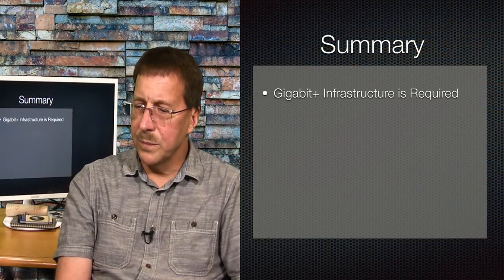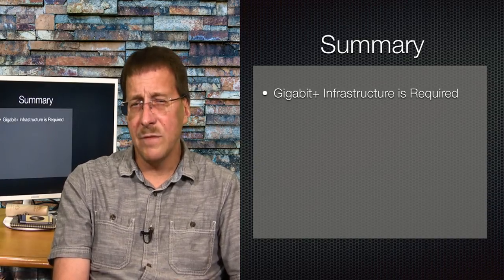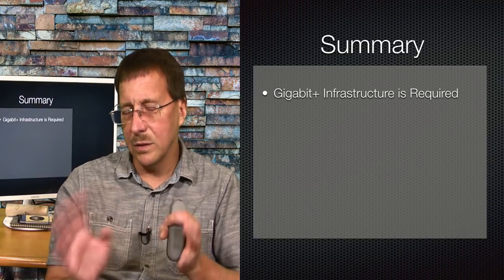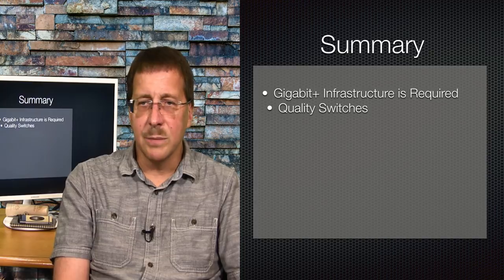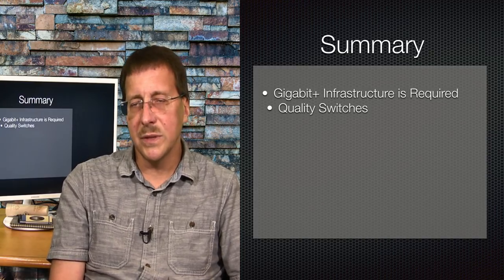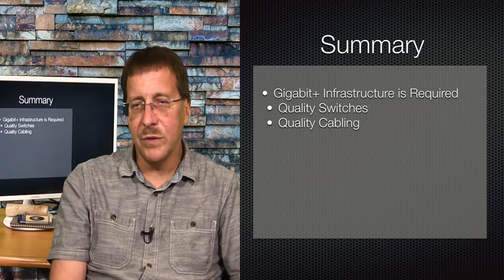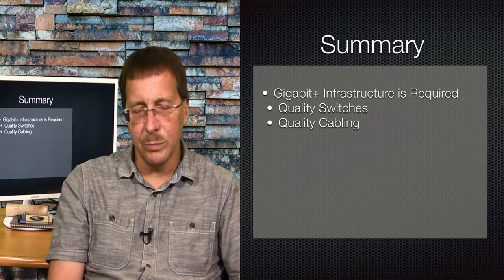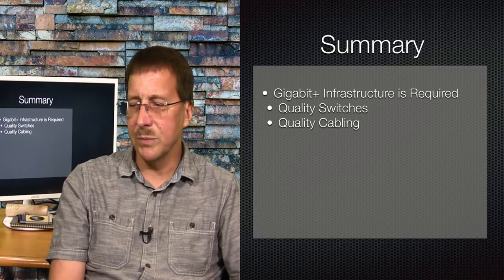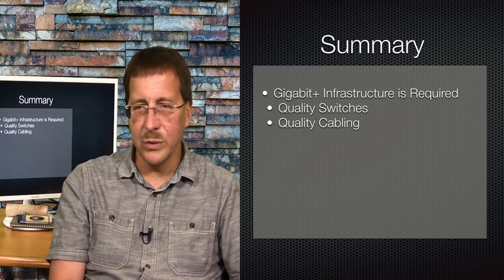To summarize: make sure you use a gigabit infrastructure — even think about 10 gig for future growth. Buy quality equipment; you pay for what you get. Invest in your cabling — even if you buy CAT6, if you don't terminate the ends properly, use poor connectors, or bend and pinch your cables, that causes nothing but problems. Make sure your cables don't get pinched or run over.